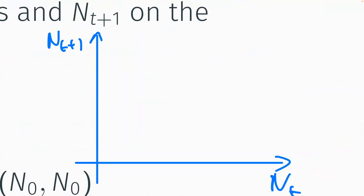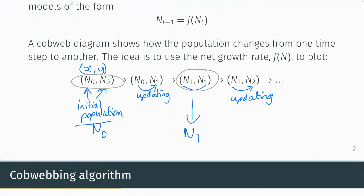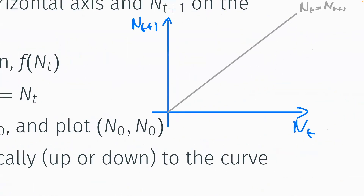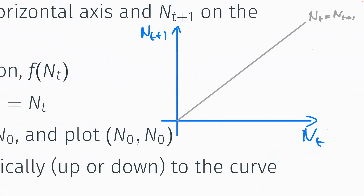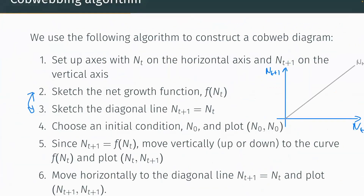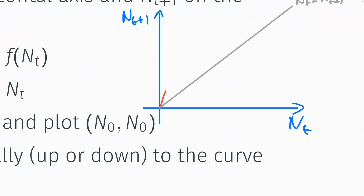We want a diagonal line where n_t equals n_{t+1}. The reason is that our iteration produces points like (n0, n0), (n1, n1), (n2, n2) — where the horizontal and vertical components are equal. These all lie along this diagonal line. Then we sketch our net growth function f(n_t).